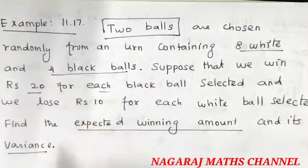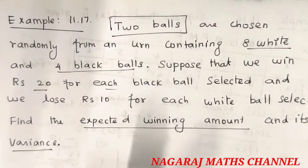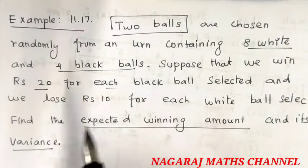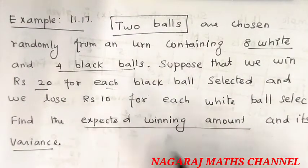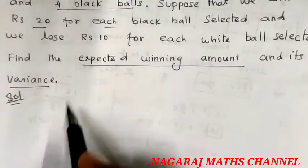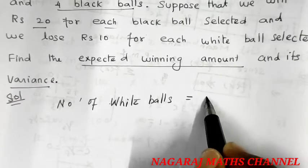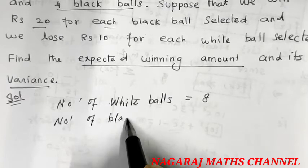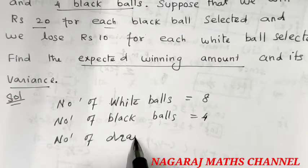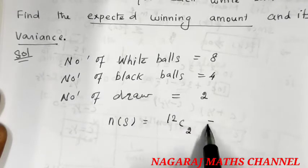Two balls are chosen. We have 8 white balls and 4 black balls, that is a total of 12 balls. If you select two black balls, you will win Rs.40. If you select one black and one white, you win Rs.20 minus Rs.10, that is Rs.10. If you select two white balls, you lose Rs.20 for each white ball selected.